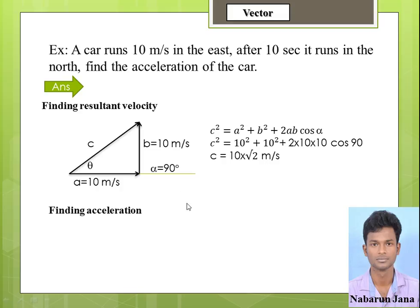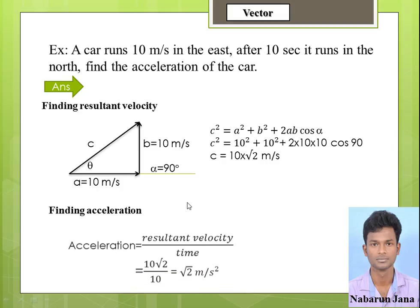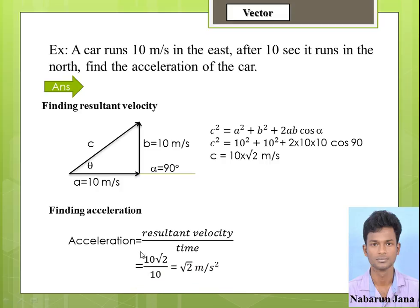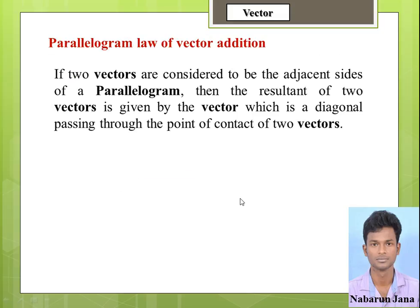Now I am going to find the acceleration. Acceleration equals velocity divided by time. The resultant velocity is 10√2 and the time given is 10 seconds, so the resultant acceleration is 10√2 ÷ 10 = √2 meters per second squared.